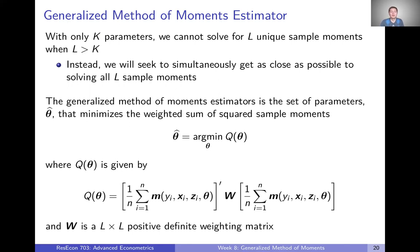So the way that we're going to formally define this estimator that achieves that kind of intuition that I just described is to say that the GMM estimator is going to be the set of parameters, we're once again just going to call it theta hat for consistency here. Theta hat's going to be the set of parameters that minimizes the weighted sum of squared sample moments. So to put this in math, theta hat is going to be the set of parameters that minimizes this objective function Q.